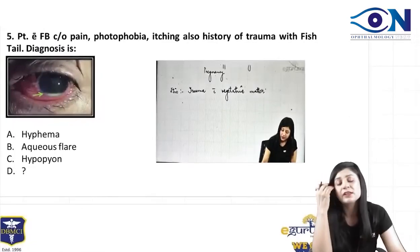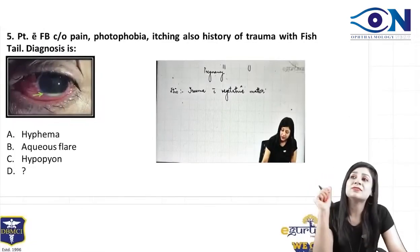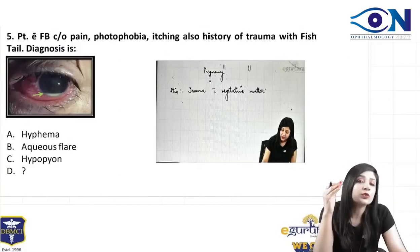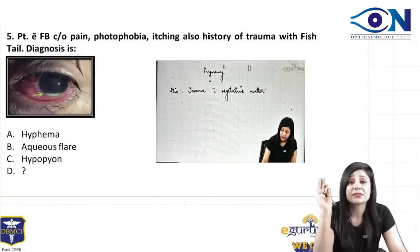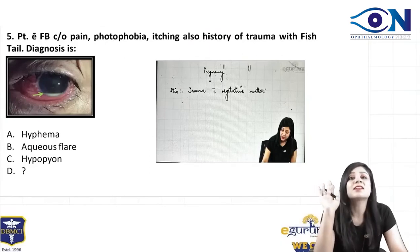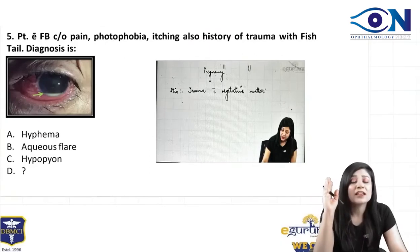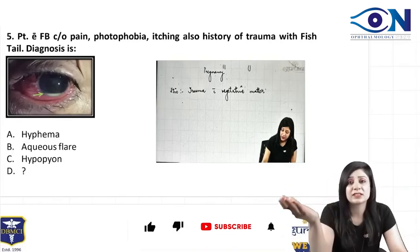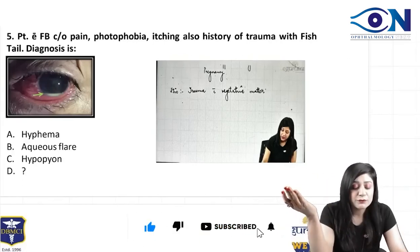An important thing is that in AIMS exams, people are always asking questions about corneal ulcers — and mostly they are asking about fungal corneal ulcers. So you should be very clear about finding the differences between bacterial and fungal ulcers.